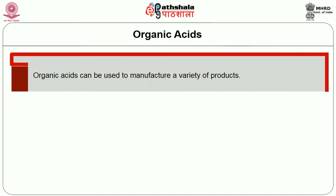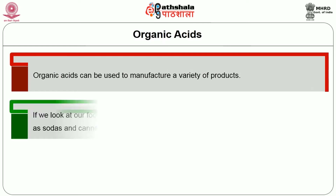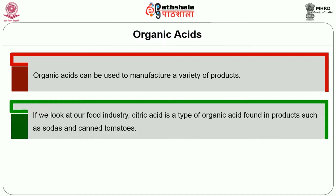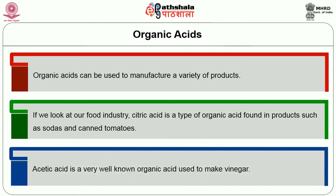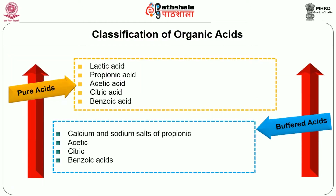Organic acids can be used to manufacture a variety of products. In the food industry, citric acid is a type of organic acid found in products such as sodas and canned tomatoes. Acetic acid is a very well-known organic acid used to make vinegar. There are two types of organic acids based on their existence: pure acids — namely lactic acid, propionic acid, acetic acid, citric acid and benzoic acid — and the second type, buffered acids, which include the calcium and sodium salts of propionic, acetic, citric and benzoic acid.